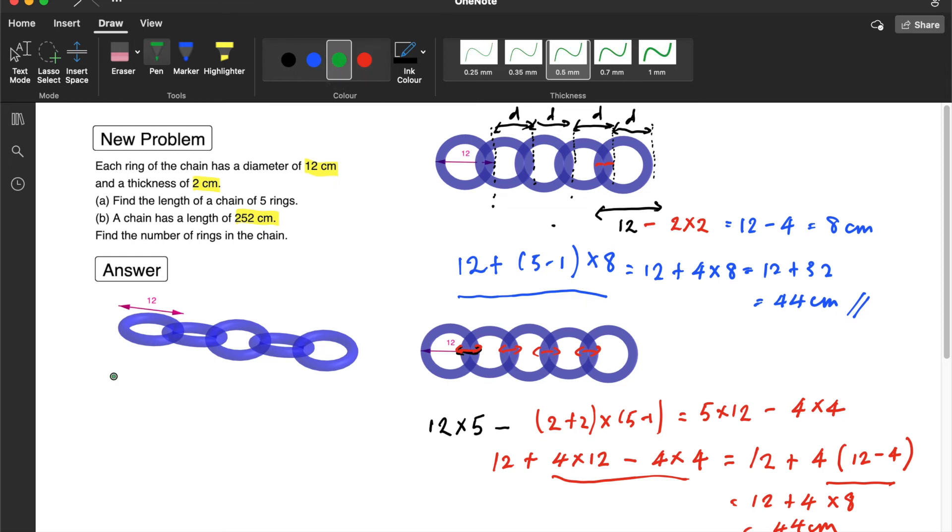So, now let's tackle part B. I think now that we have the expression to find the distance, part B is actually just the reverse of it. We need to find how many number of rings in the chain, given that the total distance is 252. So, we have to do the reverse of this calculation. You notice that in this calculation, we are going to take 12 for the first ring. So, the first step is actually to minus that one off. Minus the first ring first, because the repeated pattern is only applicable after the first ring. So, 252 minus 12 is 240.